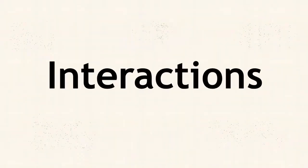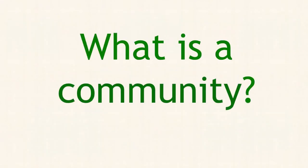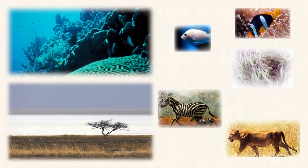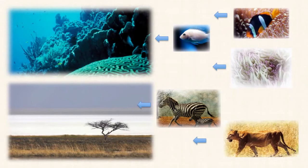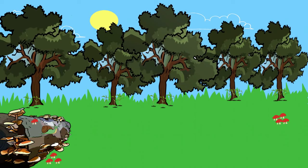Interactions are the effects organisms in a community have on one another. A community is defined as an interacting group of various species in a common location. For example, a forest of trees and undergrowth plants, inhabited by animals and rooted in soil that contains bacteria and fungi, constitute a biological community.